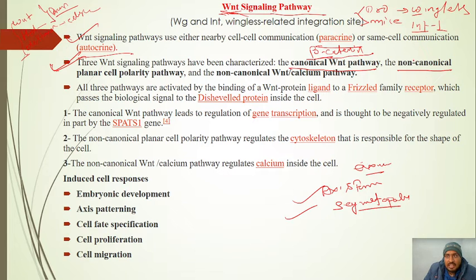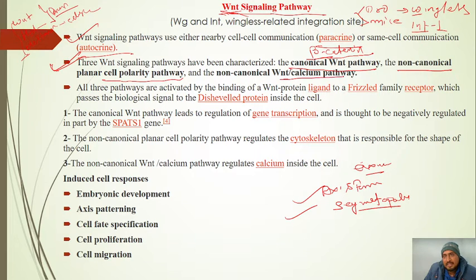The non-canonical pathway has two types: one is the planar cell polarity pathway, in which the cytoskeleton is responsible, and the other is the calcium pathway.